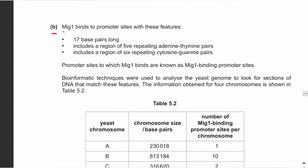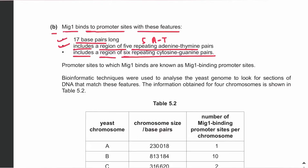Moving on to Part B: MIG1 binds to promoter sites with specific features. MIG1 transcription factors bind to a promoter that is 17 bases long, includes a region of five repeating adenine-thymine base pairs, and also includes six repeating cytosine-guanine pairs. These are the features of the promoter sites where MIG1 binds, known as MIG1 binding promoter sites.